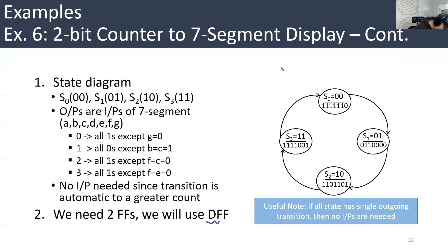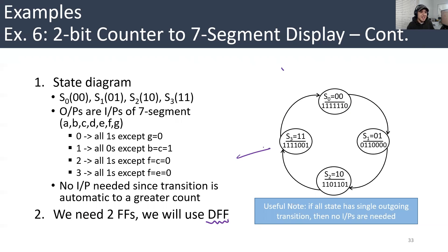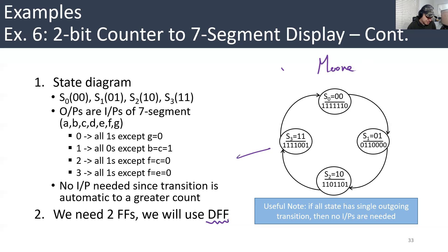How many flip-flops do we need? We need two flip-flops. Why? Because we have four states — two bits. So we need two flip-flops to make four combinations. And if we look at the state diagram, this is a Moore circuit.